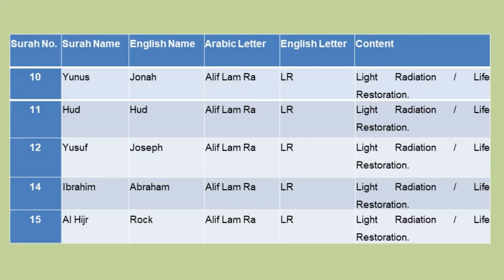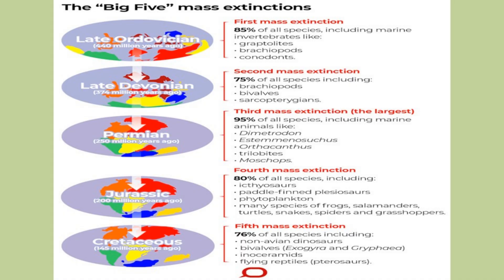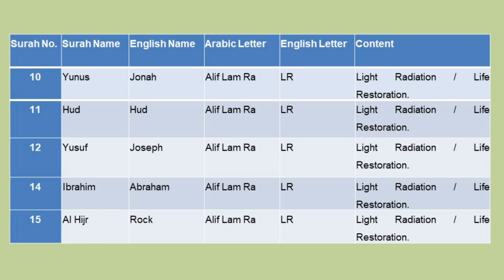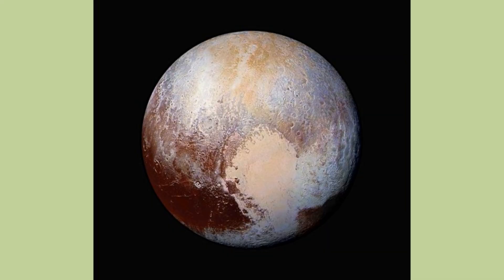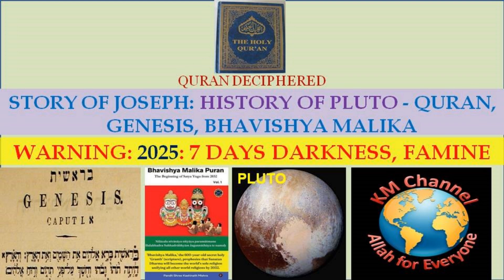Chapter 10 — Alif Lam Ra — LR — Light Radiation, Life Restoration. Chapter 11 — Alif Lam Ra — LR — Light Radiation, Life Restoration. This chapter is related to the extinction of life and restoration of new species. Chapter 12 — Alif Lam Ra — LR — Light Radiation, Life Restoration. This chapter is about Pluto and the migration of the family of Jacob from Canaan to Egypt, representing the migration of organisms. More details are in my previous presentation, 'Story of Joseph — History of Pluto.'